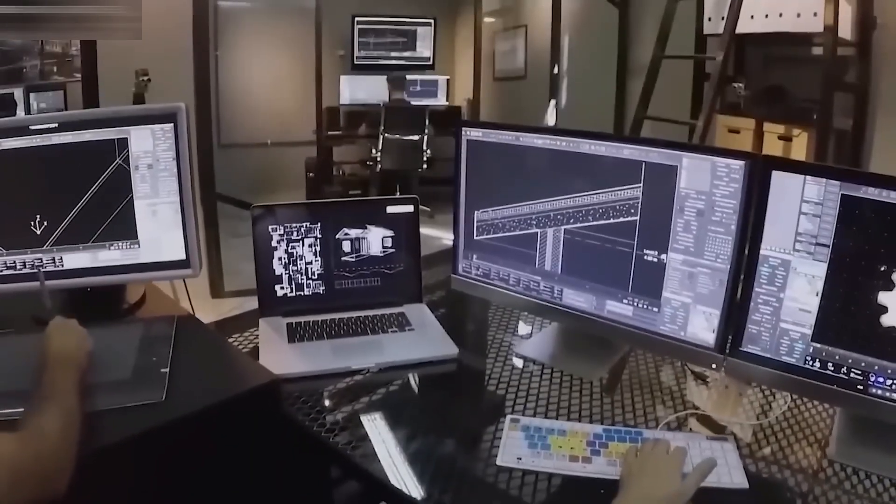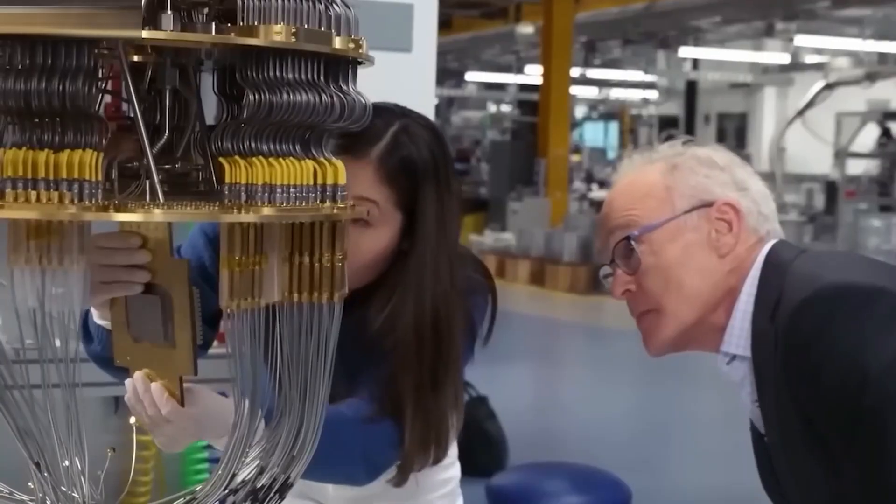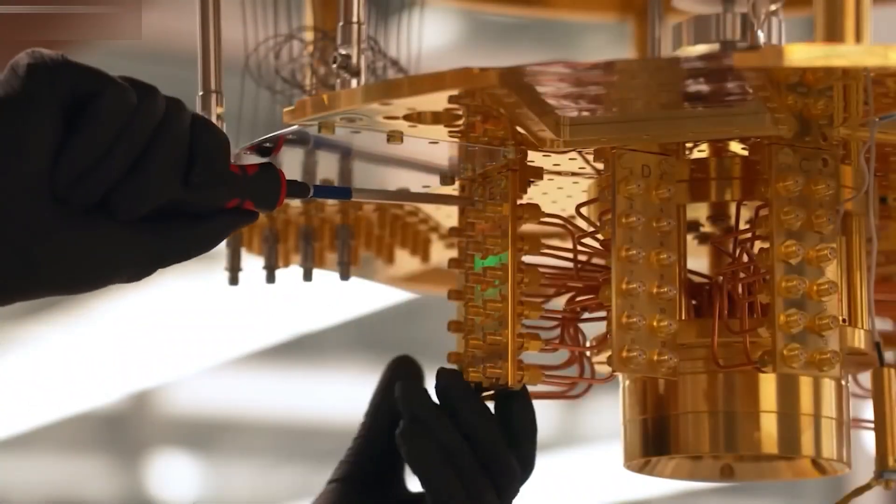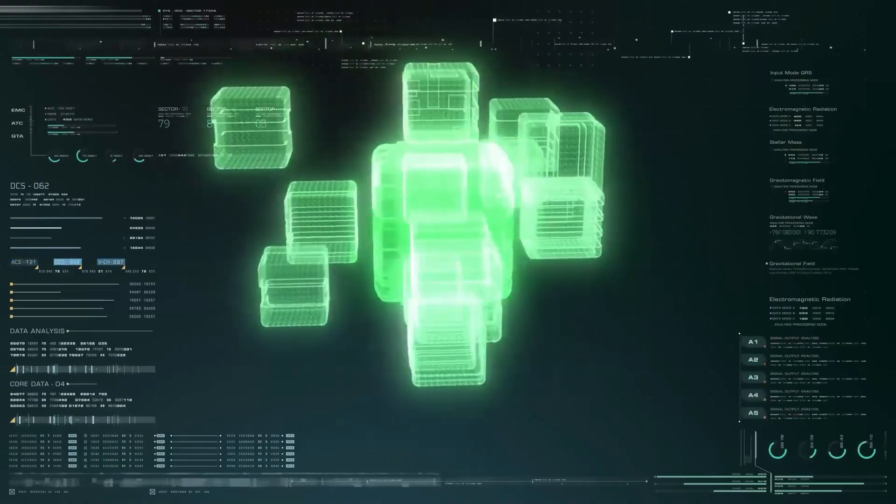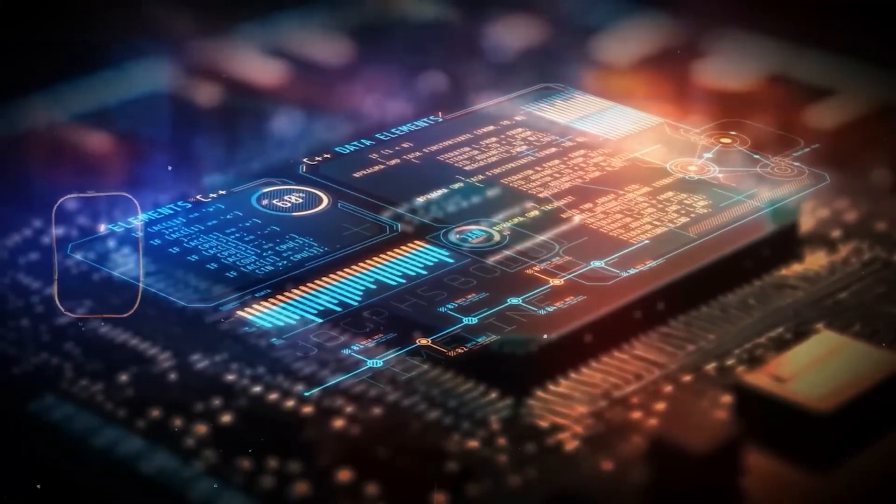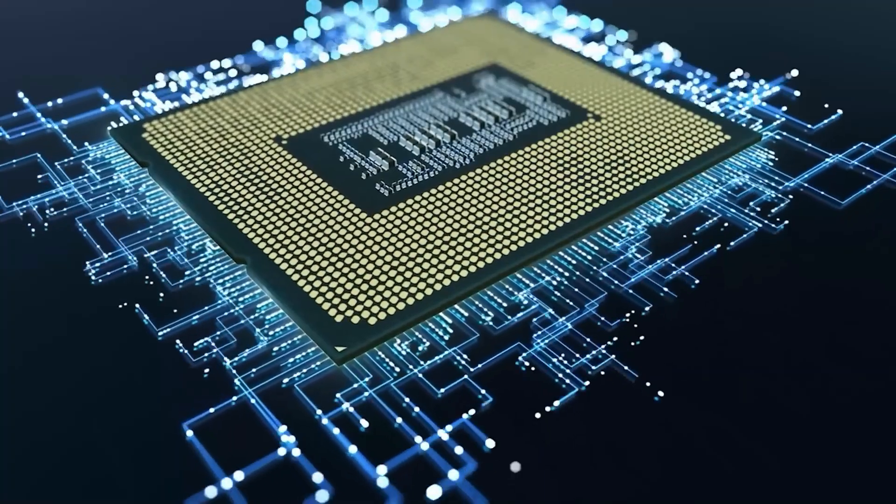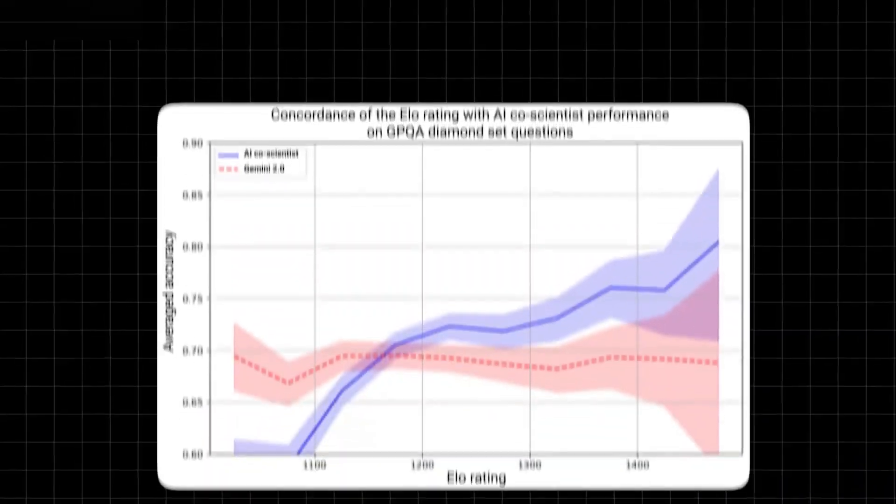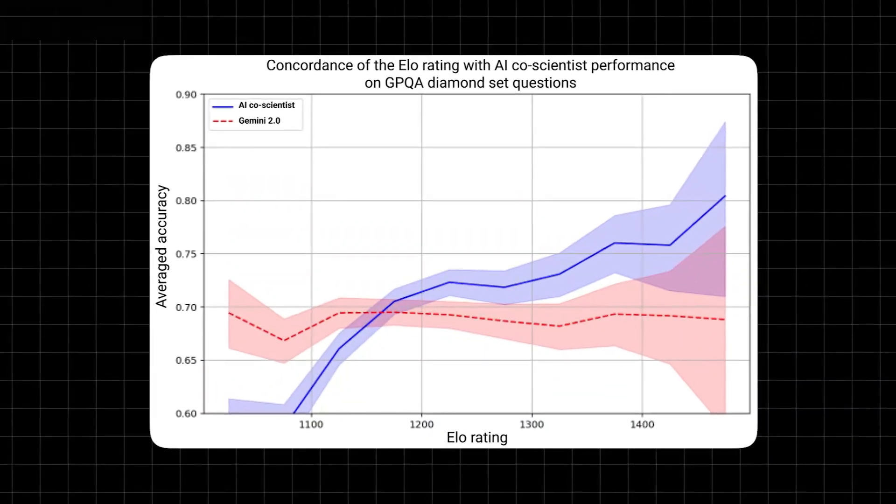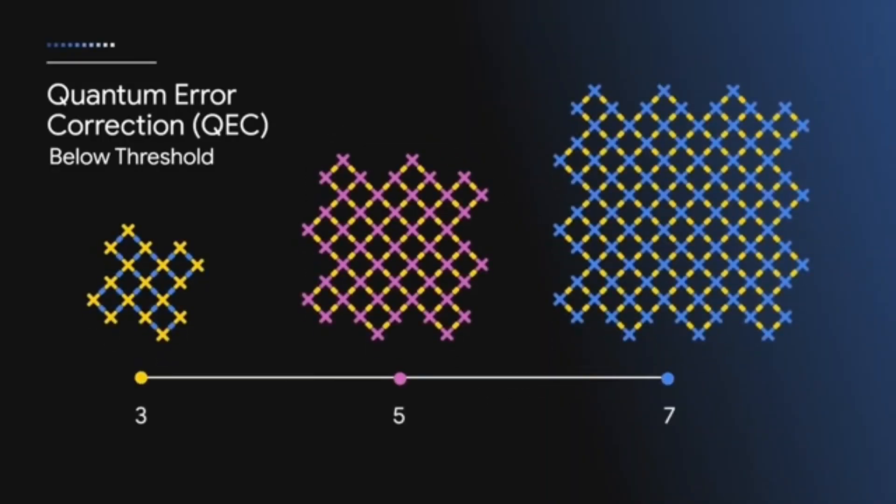The error rate dropped. This is the opposite of what typically happens with larger quantum systems. Traditionally, the more parts you add, the more unstable a system becomes—like trying to get 68 people to dance in perfect sync. But with Willow, the dance became more accurate as more dancers joined. In technical terms, this is called below-threshold performance.